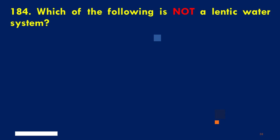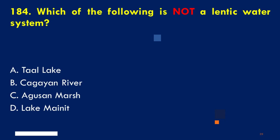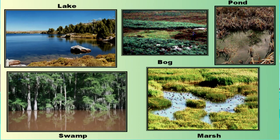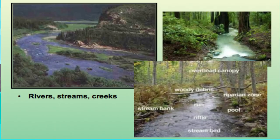Which of the following is not a lentic water system? A. Taal Lake, B. Cagayan River, C. Agusan Marsh, D. Lake Mainit. The correct answer is B. Cagayan River. Lentic water systems are standing waters like lakes, ponds, and swamps. Lotic water systems are running waters which include rivers, streams, brooks, and channels.